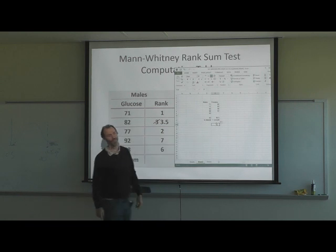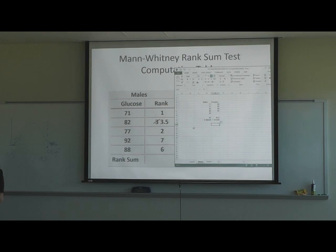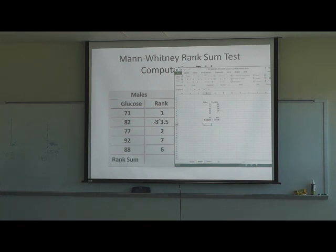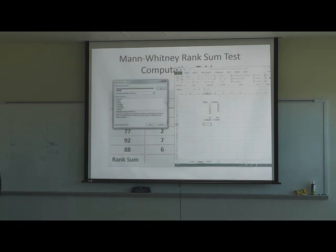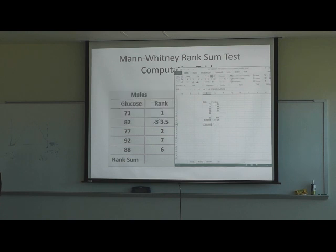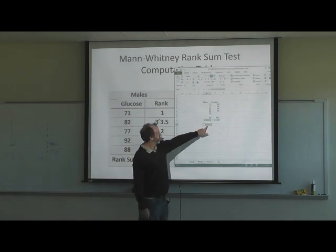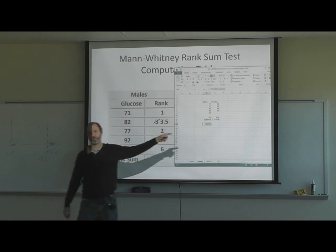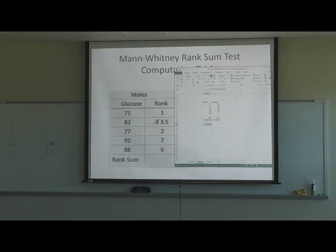The variance is just the square of the standard deviation. Now we'll do the F-test. Go to equals, then the function, find F-test, hit OK. Array one is the males data, array two is the females data. Hit OK — it gives us a p-value. That p-value is 0.82. So if we're using significance level 0.05, are these variances different or the same? They're the same.